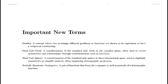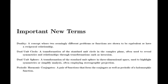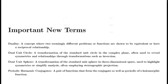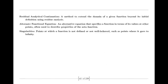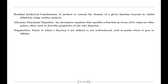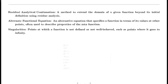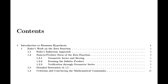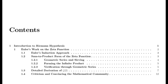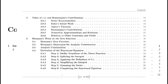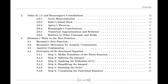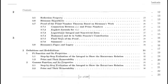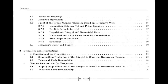Moving to the 19th century, we encounter Bernard Riemann, who expanded our understanding of complex functions. Riemann introduced the concept of analytic continuation, which allowed for the extension of functions beyond their initial domains. For example, he extended the Riemann zeta function — initially defined only for complex numbers with real parts greater than 1 — to the entire complex plane except for s equals 1, where it has a simple pole. This was a crucial advancement in complex analysis.